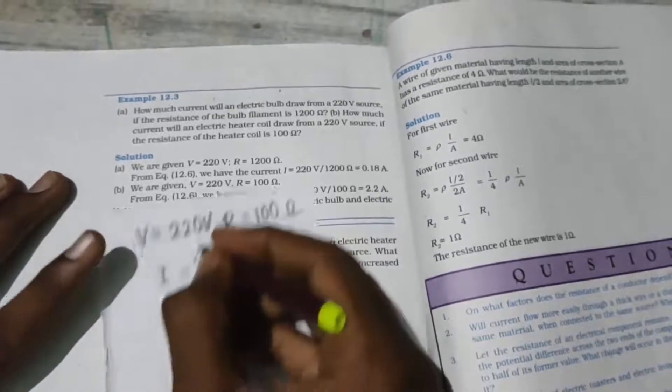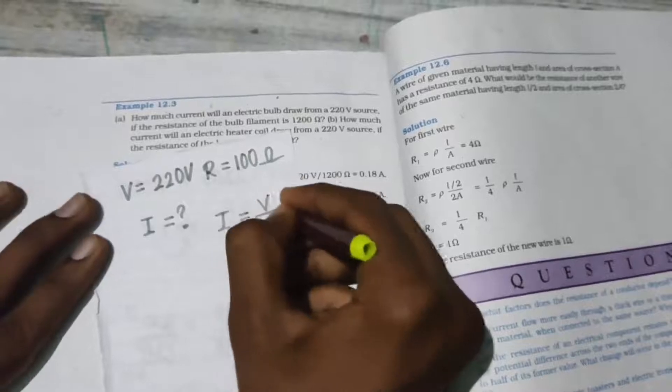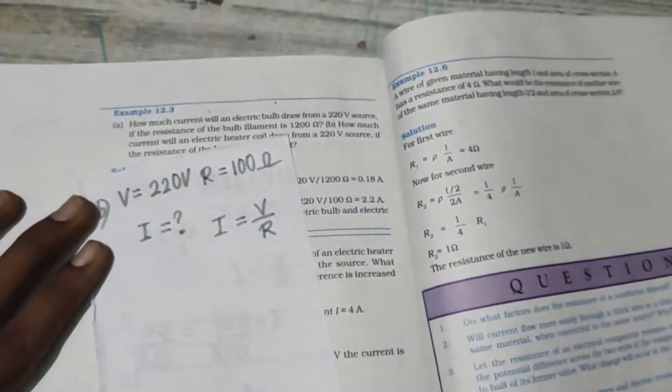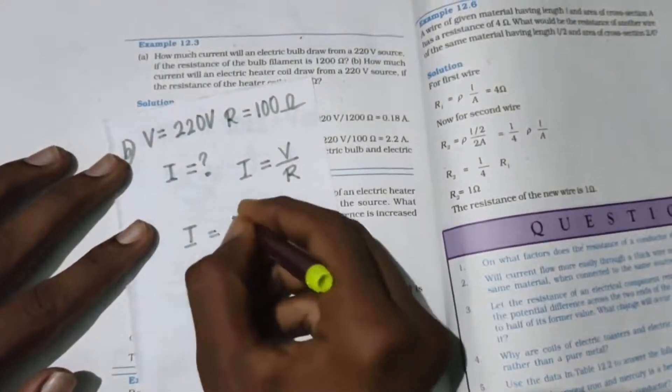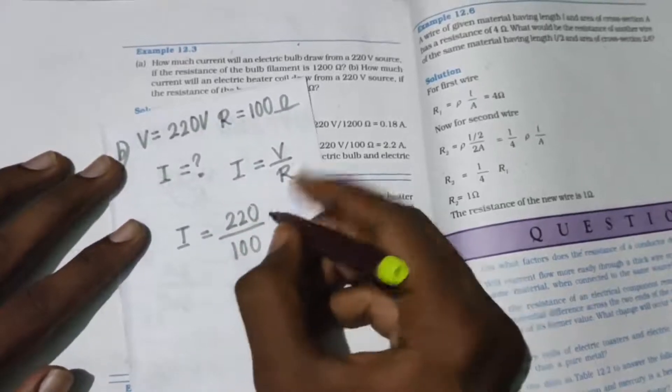Again you have to use the same formula. What is the formula? I = V/R. This is part B, very simple question. Again, I = 220 divided by 100.